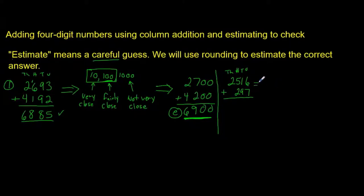So, we're going to estimate. And we're going to round to the nearest hundred. So, that means that this one becomes 2,500 because 2,500 is closer than 2,600. And rounding to the nearest hundred here is going to make that 300. We add: 0 plus 0 is 0, 0 plus 0 is 0, 500 plus 300 is 800, and 2,000 plus 0 is 2,000. So, that's our estimate.